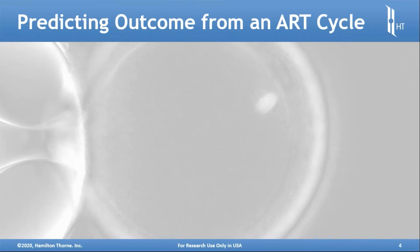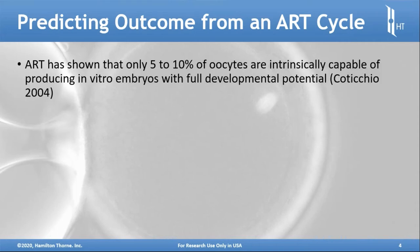One of the goals of embryologists and folks involved in clinical fertility assistance is to predict the outcome from an ART cycle. Statistically, and in the literature, it has been shown that only 5 to 10 percent of all oocytes are intrinsically capable of producing in vitro embryos with full developmental potential. So you have to go through a lot of eggs to help patients become pregnant.